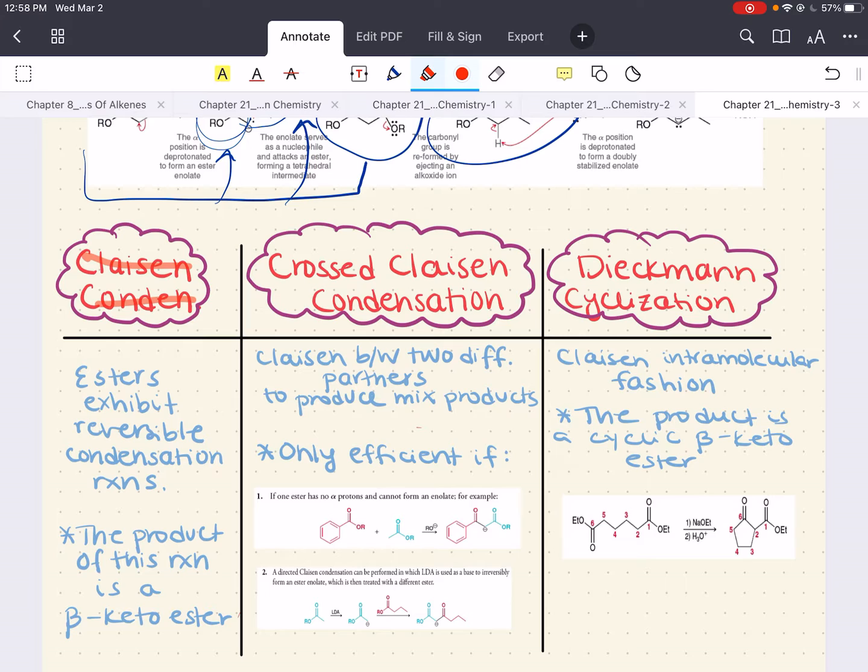Second, you don't want to use hydroxide as a base because it can cause hydrolysis. Instead, you want to use an alkoxide base like the alkyl group that is already present in your starting ester. And the reason for this is you want to avoid transesterification.